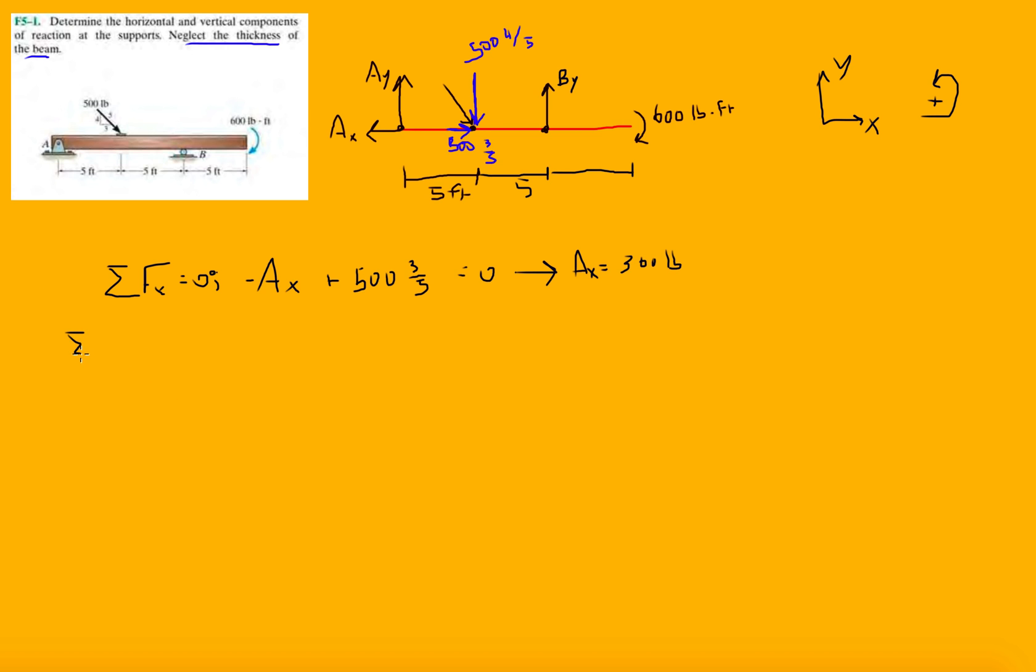And then let's do the same thing for Y. ΣFy equals 0. That's all the forces in the Y direction. We're going to have Ay, we have minus 500 times 4 over 5, plus By equals 0. Right here where we should be like, hmm, there's two unknowns, one equation. So what can we do? Well, the last static equilibrium condition that we can use is the moment equation.